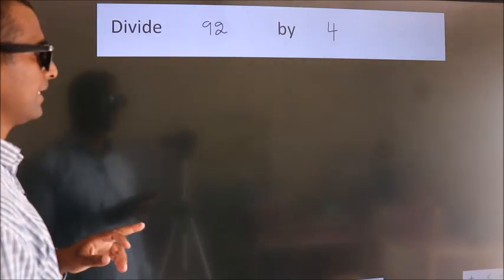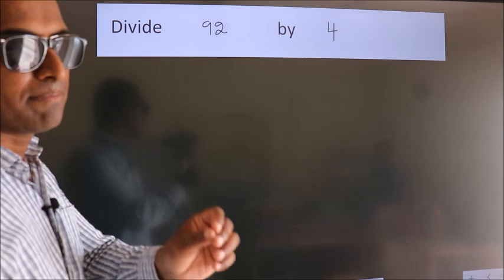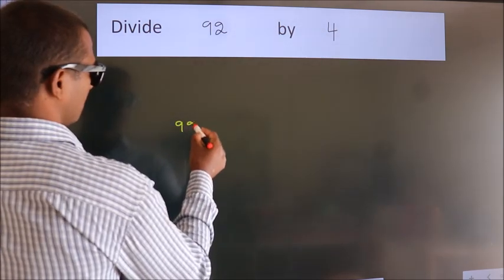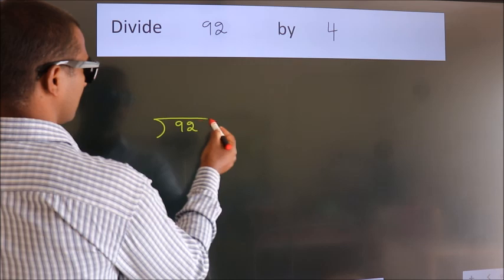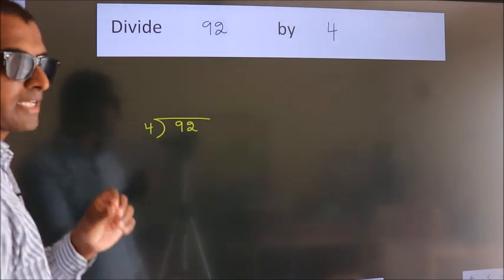Divide 92 by 4. To do this division, we should frame it in this way. 92 here, 4 here. This is your step 1.